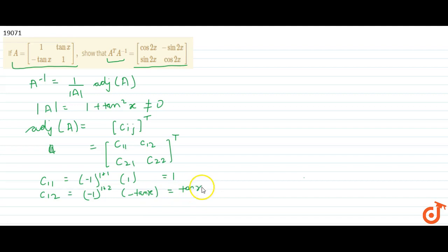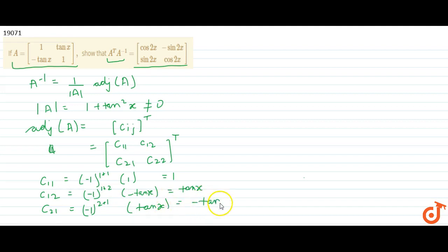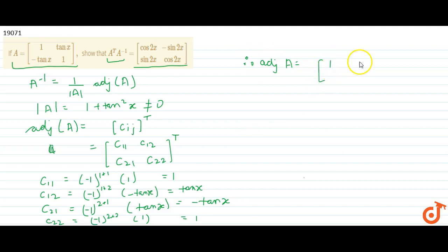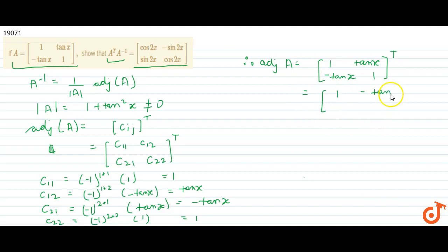C21 equals (-1)^(2+1) into 1, which equals -tan x. C22 equals (-1)^(2+2) into 1, which equals 1. Therefore the adjoint of A is [1, tan x; -tan x, 1], and its transpose is [1, -tan x; tan x, 1].